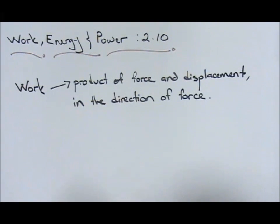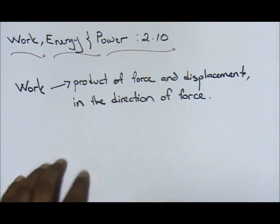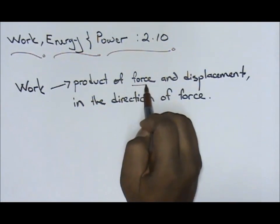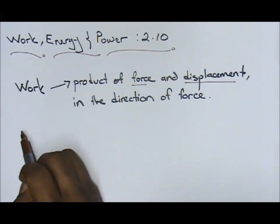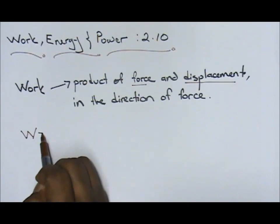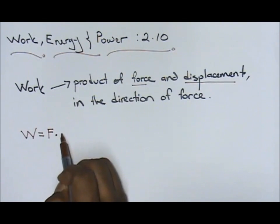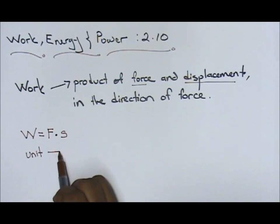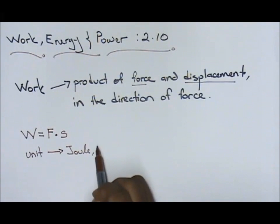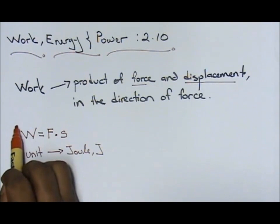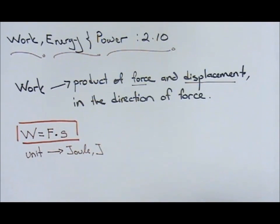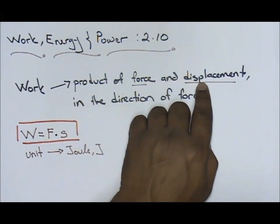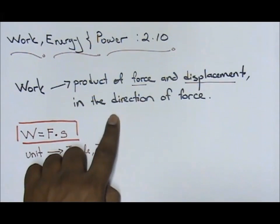Most students tend to remember the definition of work as a product of force and displacement. I don't blame you because if you look at the formula for work, work is given to you as force times displacement. The unit for work is Joule with the symbol J. This is your formula for work. Actually, you have learned this before in form 2. Hopefully you guys still remember, but the definition is the one that is a little bit new - product of force and displacement in the direction of force.